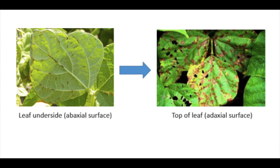Symptoms of infections in older host plants generally occur on the underside of leaves as lines of dark red lesions on leaf veins. As the disease progresses, this discoloration will spread to the upper leaf surface and is easier to see.